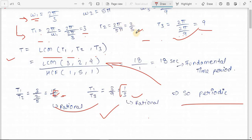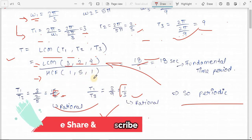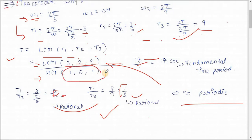Since T₂ is in fractional form, to get the LCM of fractional numbers, we take the LCM of the numerators and HCF of the denominators. LCM of numerators (3, 2, 9) = 18, and HCF of denominators (1, 5, 1) = 1. So the fundamental time period = 18/1 = 18 seconds.